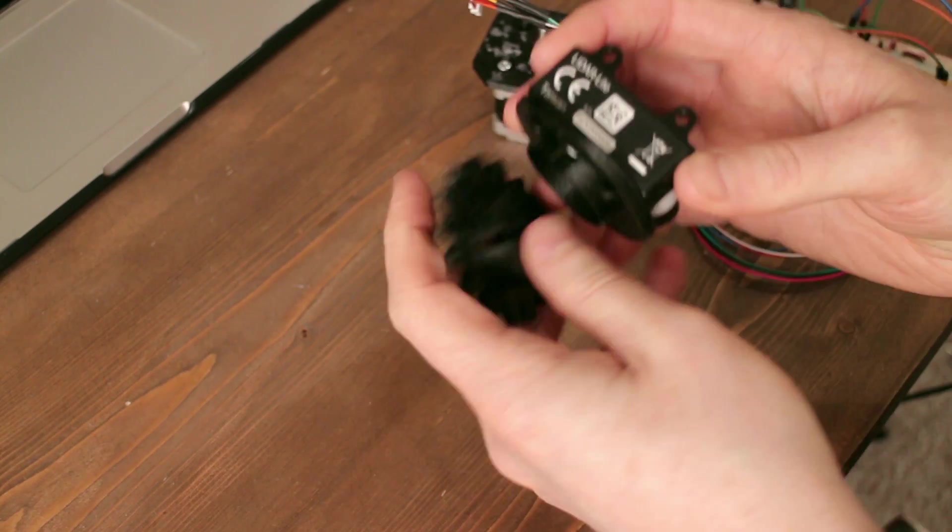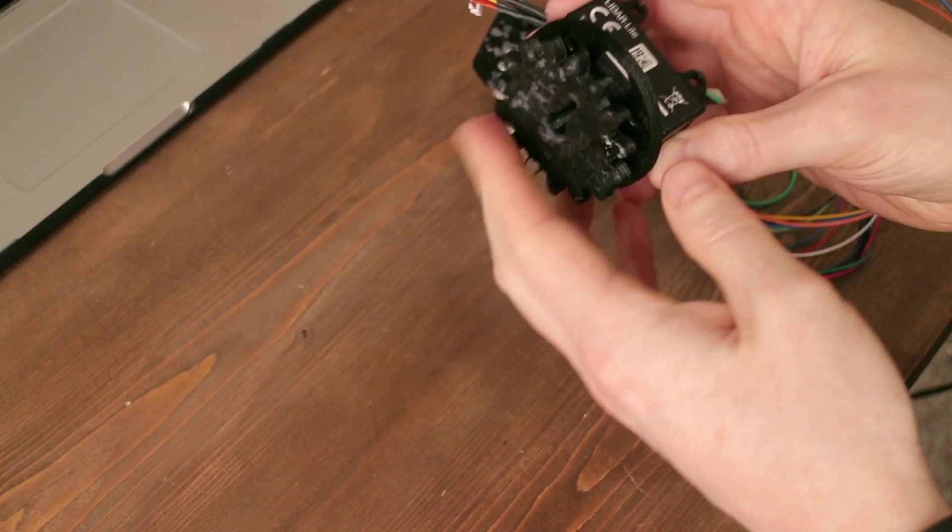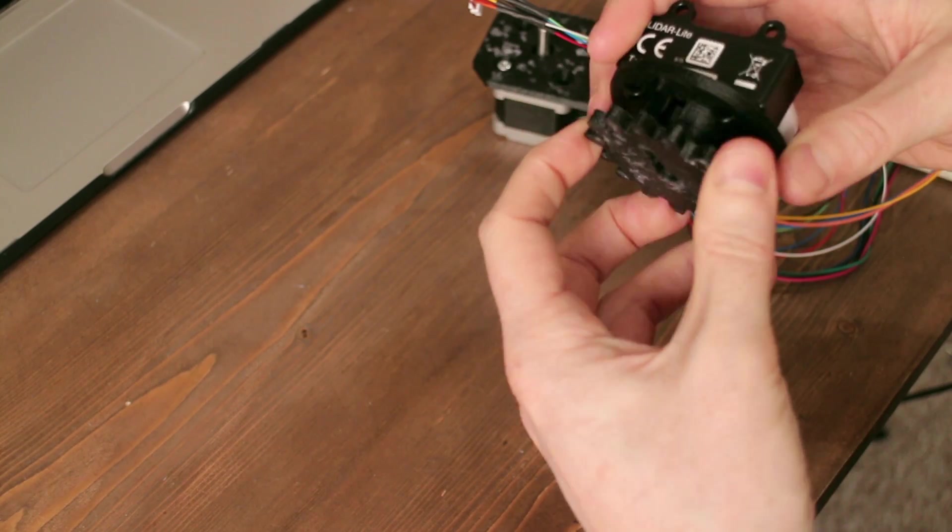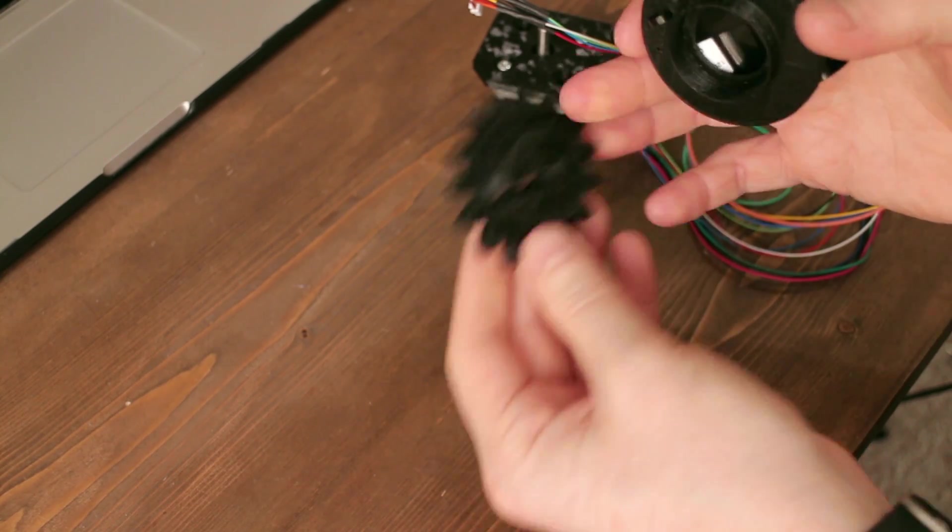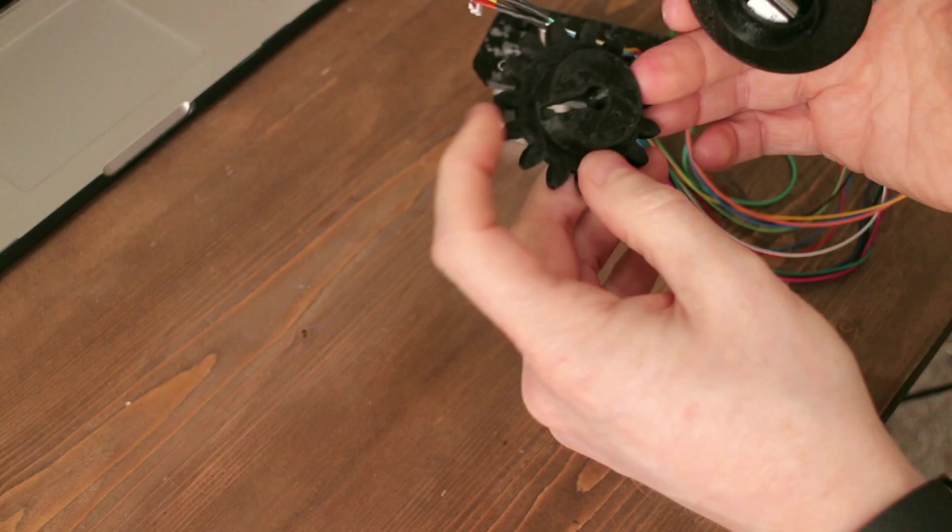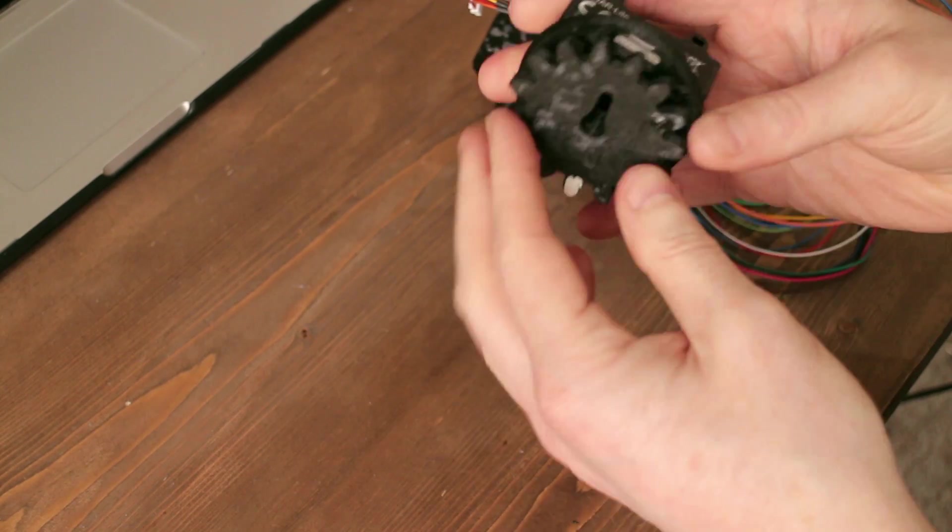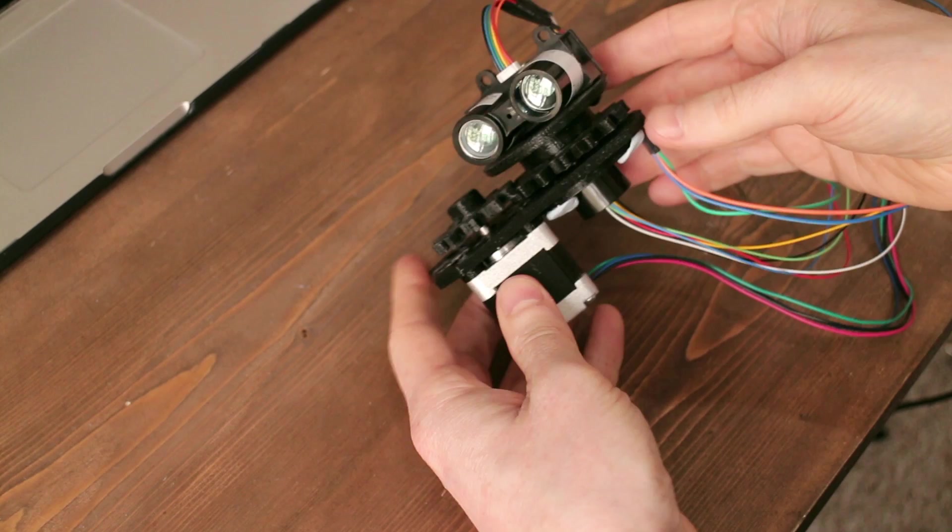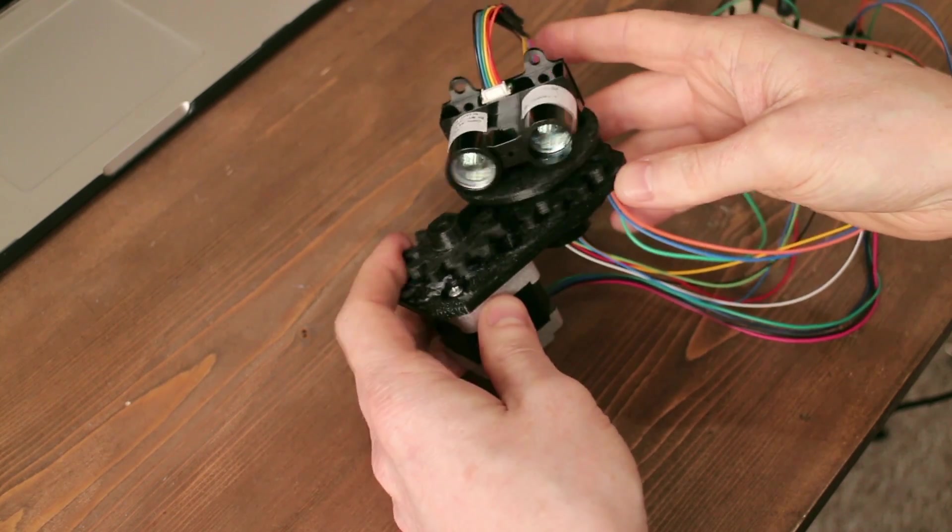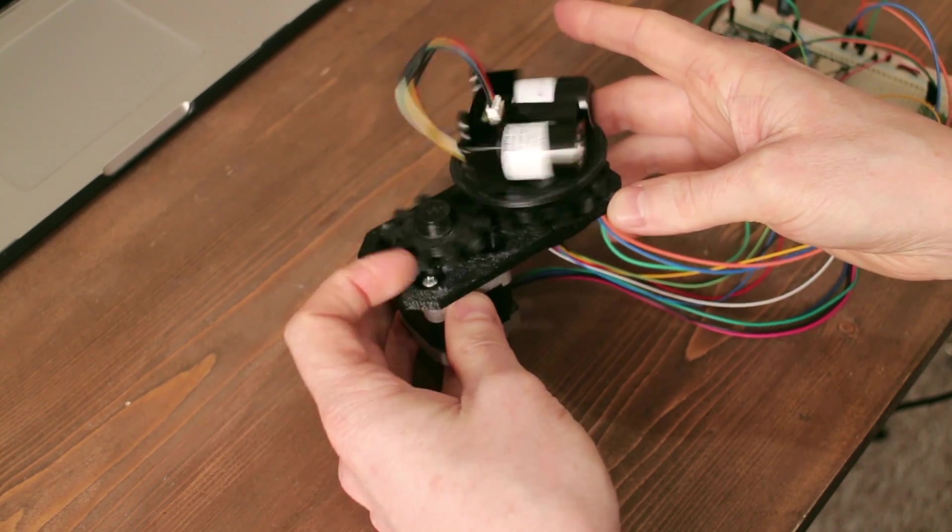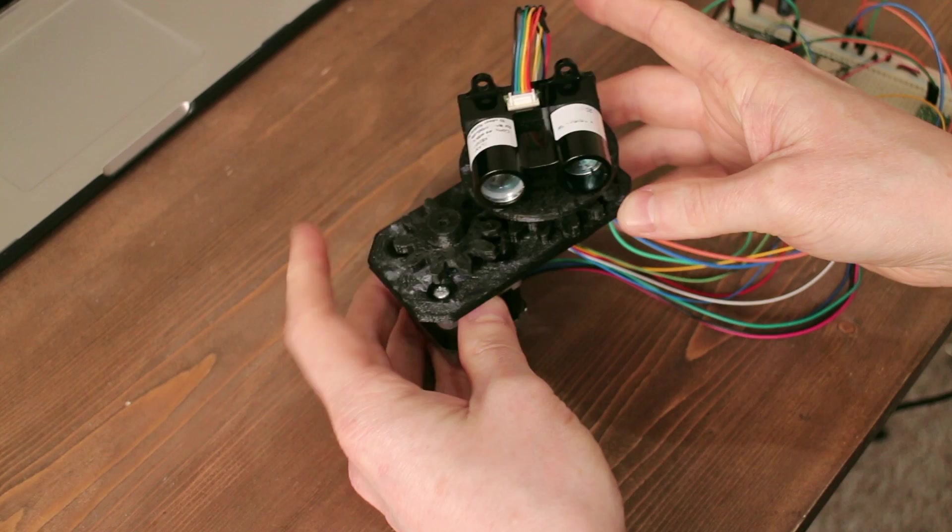This piece here then slots down over the top. It's got a couple of cutouts in it for cable management, so the wire feeds through the middle, out the side, and back through the top there. And with everything connected up and plugged in, the motor spins and the sensor spins.